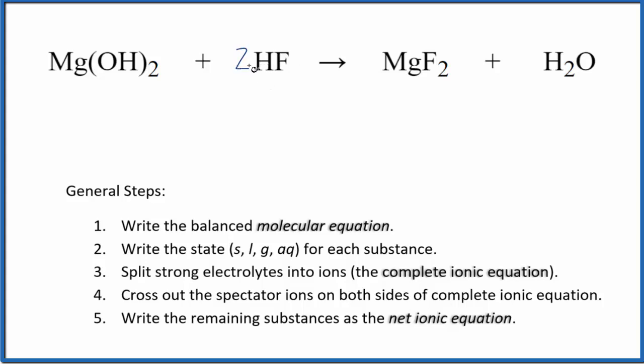Now I have two hydrogens here, and then two times one—two hydrogens here—so four total hydrogens. Let's put a two here to balance the hydrogens. I have two oxygens, two times one, which gives me two oxygens on both sides. And I have magnesium on both sides. That's the balanced molecular equation.